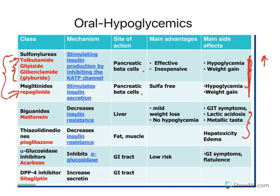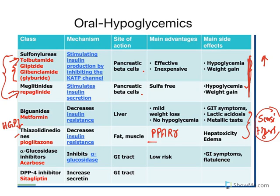The next two drugs are known as insulin sensitizers — they make cells more sensitive towards insulin. Biguanides reduce hepatic glucose production, which causes cells to become more sensitive to insulin. Thiazolidinediones act on a receptor known as peroxisome proliferator-activated receptor gamma (PPAR-γ), which reduces circulating free fatty acids and increases insulin sensitivity. That is why both classes are known as insulin sensitizers.